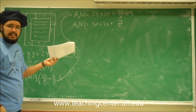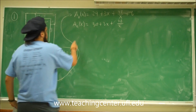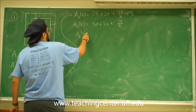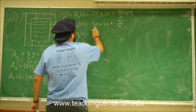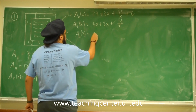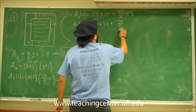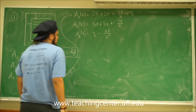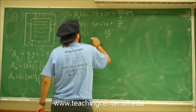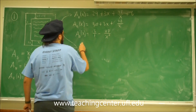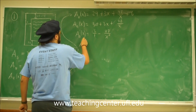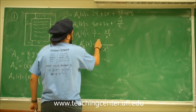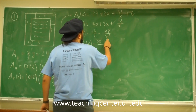We want to minimize this, so let's take the first derivative. A'(x): the derivative of 30 is 0, the derivative of 3x is 3, and the derivative of 48/x is −48/x². Combining into one fraction over x², the numerator is 3x² − 48.